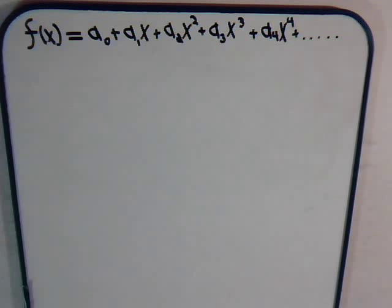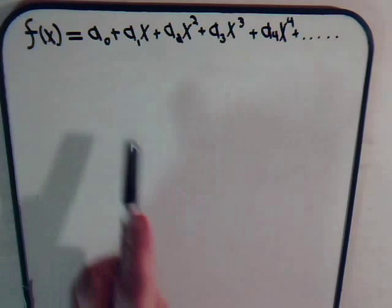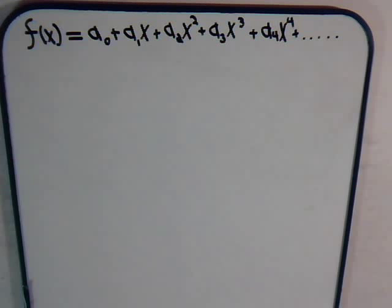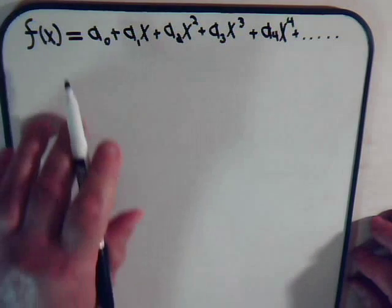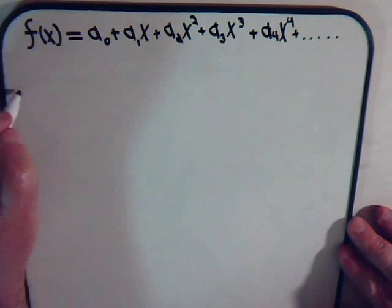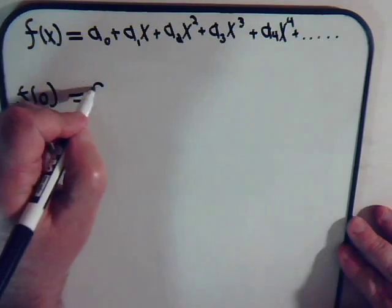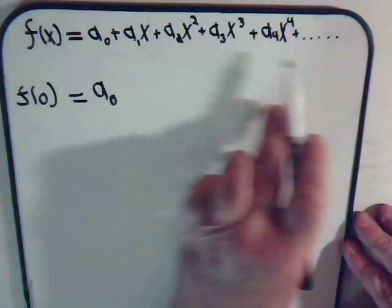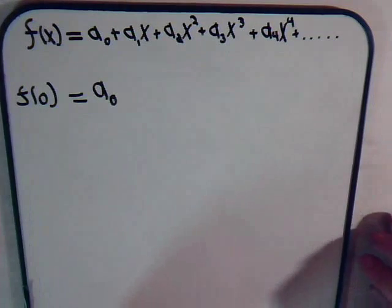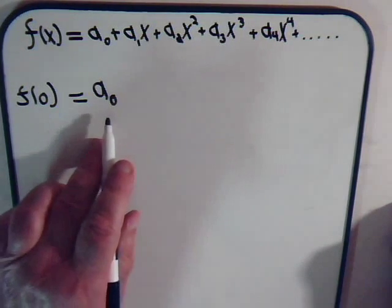We're not going to do that in this video, but what we can do is ask: if we have this function, and indeed that function can be expressed as a power series, what properties would we expect it to have? We can say: if we evaluate that function where x is 0, then we'd expect that to equal just some constant — all the other terms are going to be 0 — so f(0) is going to be some constant we're calling a-sub-0.